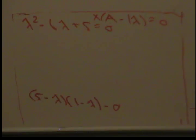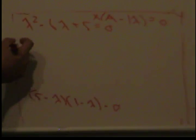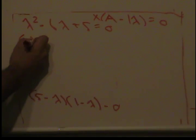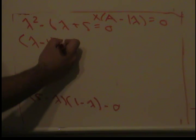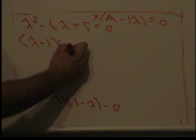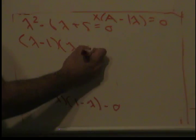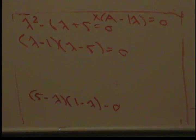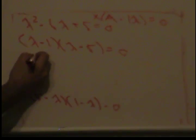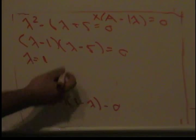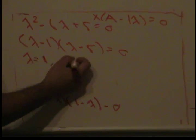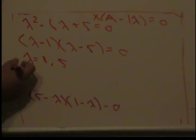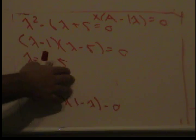So it equals zero. Lucky for us, this can be factored easily, so it's lambda minus 1 and lambda minus 5 equals 0. Solving for each, we get lambda equals 1 and lambda equals 5. So therefore the eigenvalues are 1 and 5.